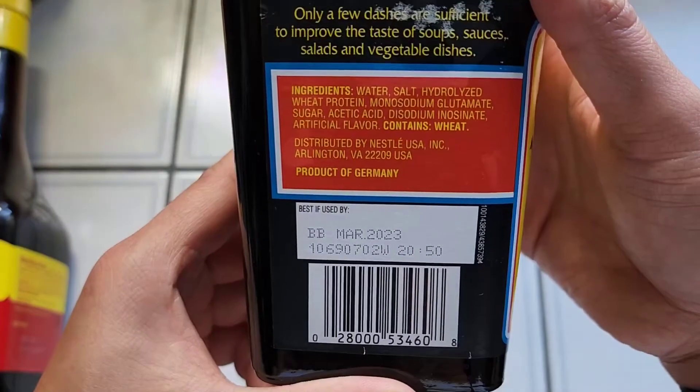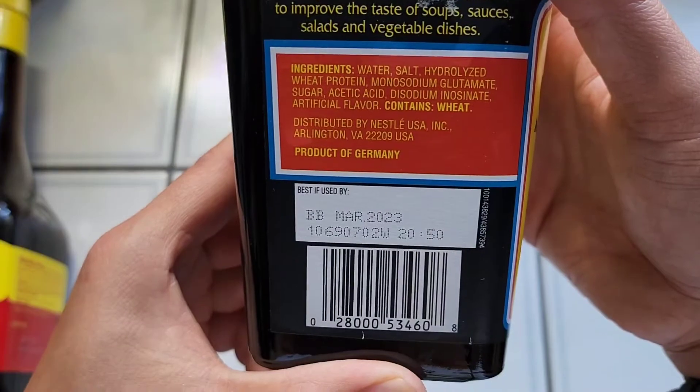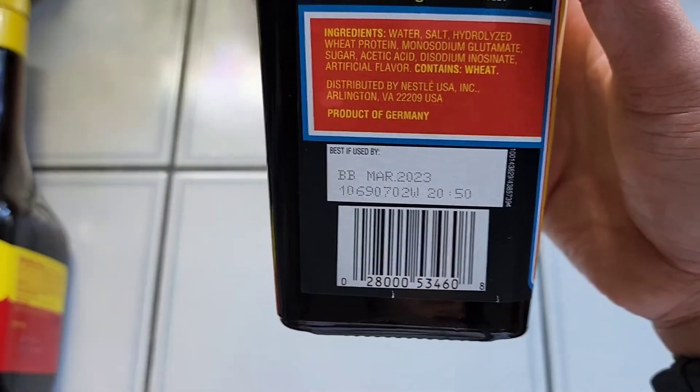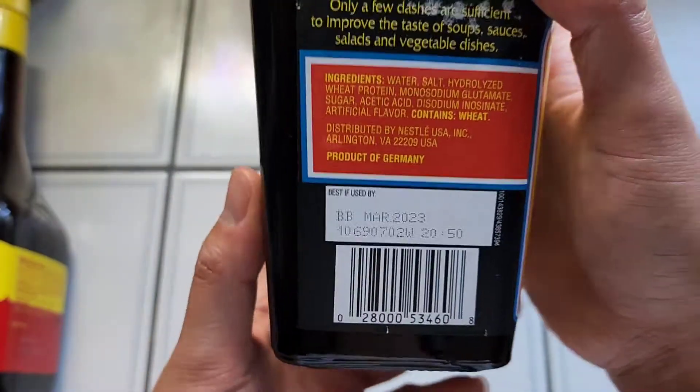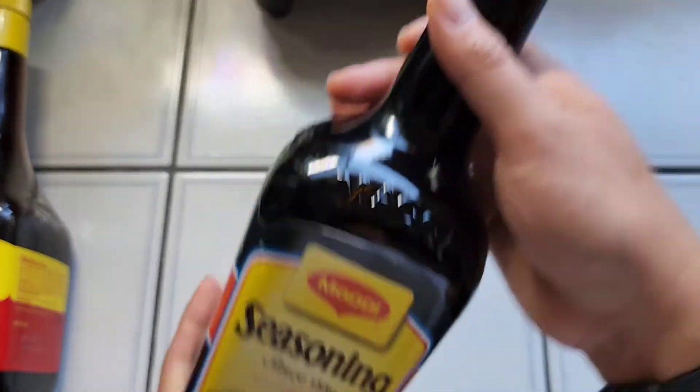So here you can see the ingredients. Contains wheat. And this is a product of Germany. March 23rd is the expiration date. So basically about a year that it can last.